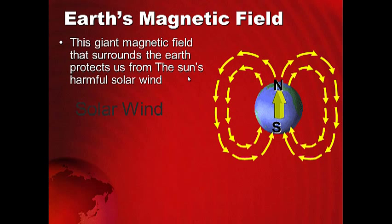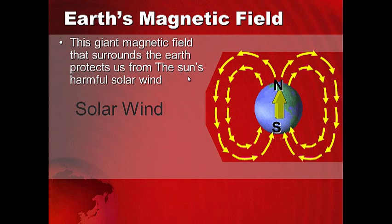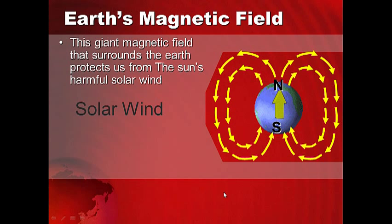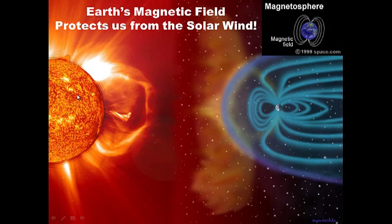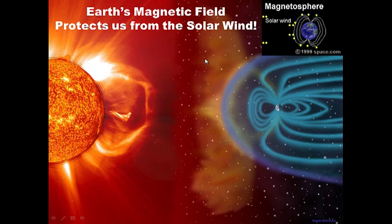This magnetic field of earth is very important because it protects us from the solar wind — a blast of charged particles that shoot at us constantly from the sun. It's like our force field, like in Star Wars. This magnetic field protects us from the sun's harmful solar wind, which shoots deadly radioactive particles at us. Without it, our lives would be very miserable.